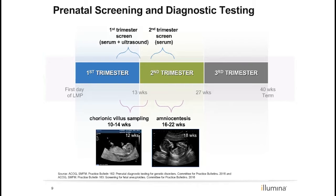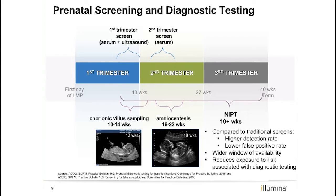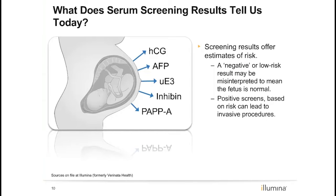There are non-invasive and invasive options in both the first and second trimesters; however, options in the third trimester are quite limited. In particular, serum screening is not available after 22 weeks gestation. When a serum screen is performed during pregnancy, screening results offer an estimation of risk. Current serum screening options can provide risk for Down syndrome, trisomy 18, and in some cases trisomy 13, as well as risks for open neural tube defects.